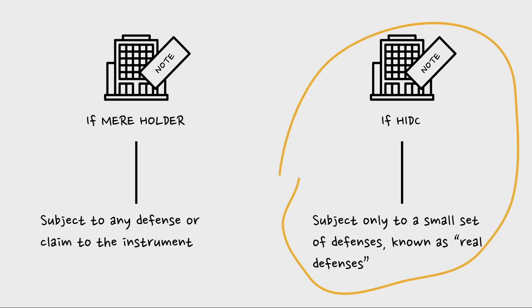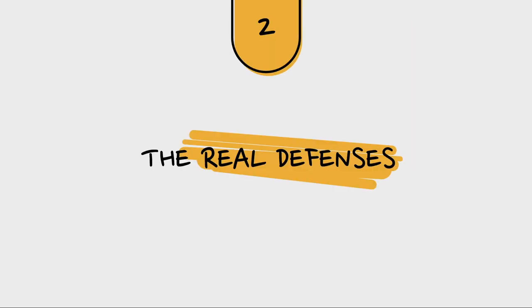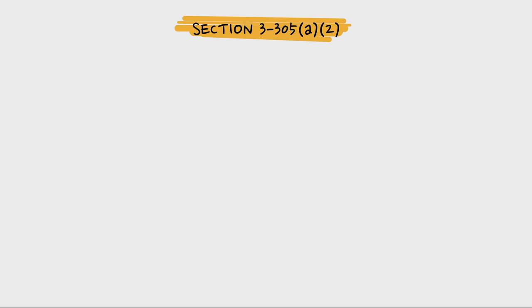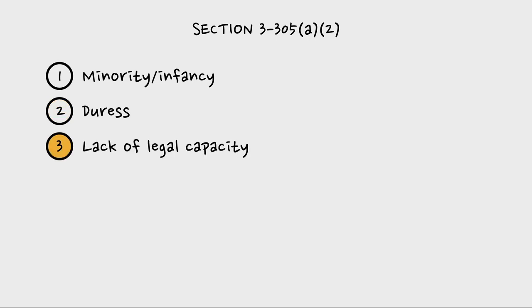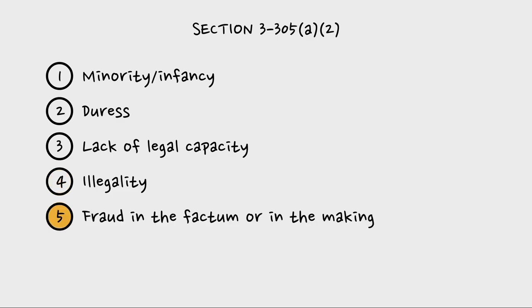If all the requirements are satisfied, they qualify as a holder in due course, meaning the only defenses to which they'll be subject are the so-called real defenses. Section 3-305(a)(2) lays these out: minority (sometimes called infancy at common law), duress, lack of legal capacity, illegality, fraud in the factum or in the making, and bankruptcy discharge.